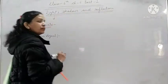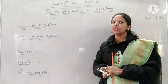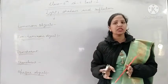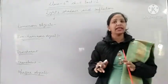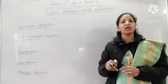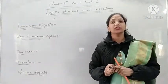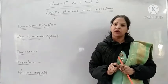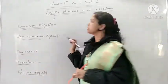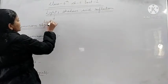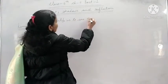You all know about light. With the help of light, we are able to see the objects. Without light, we are not able to see the objects around us. We are able to see objects at daytime with the help of sunlight, and at night we are not able to see the objects around us clearly. So light helps us to see the objects.